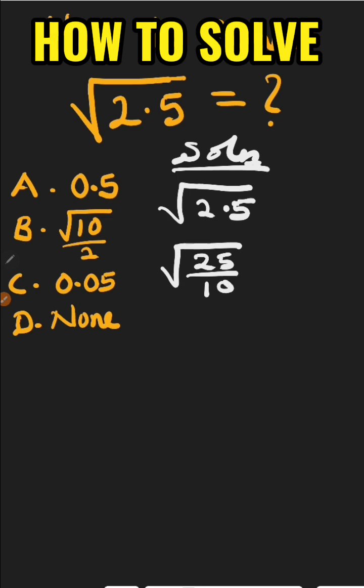This is the same thing as root of 25 all over root of 10, which we can write this to be root of 25 is 5 and root of 10 remain root 10.